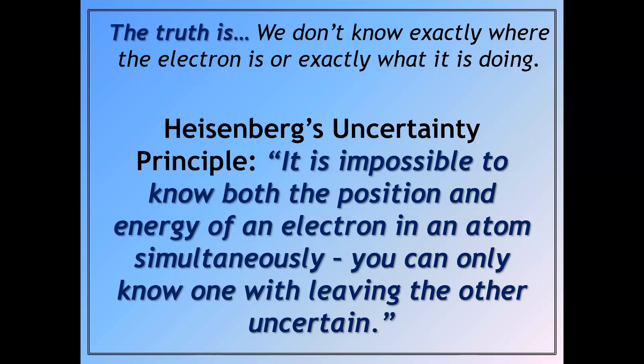The idea is that it's impossible to know both the position and the energy of an electron in an atom simultaneously. You can only know one while leaving the other uncertain. So what am I talking about here? What that basically means is if you're trying to, for example, measure the energy of the electron...